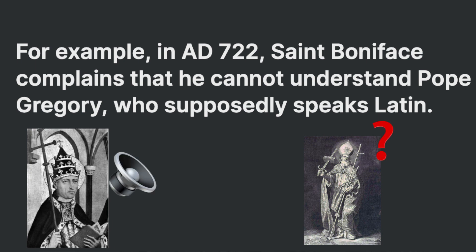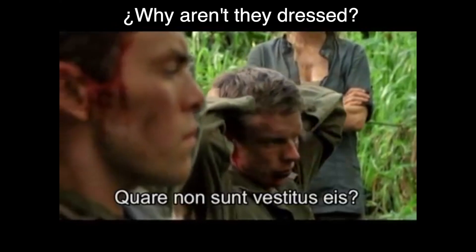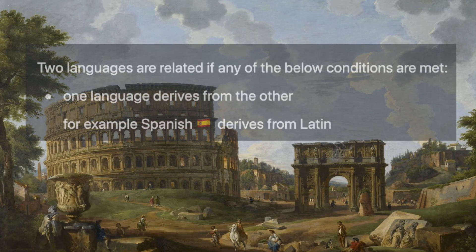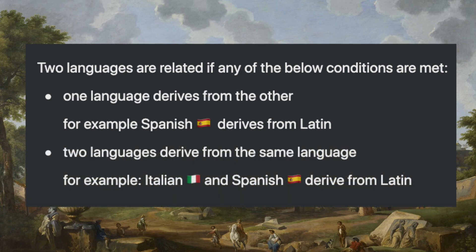Latin not only evolved a lot, but also was divided into new languages, which today we know as Spanish, French, Portuguese, Italian, Romanian, and others. Today, the language is still taught and for many professions it's a must, but almost no one communicates in Latin anymore. With these two examples, we can finally define what it means for two languages to be related. Two languages are related when one is derived from another — such as Spanish from Latin — or when two languages are derived from the same language, such as Italian and Spanish both derived from Latin.